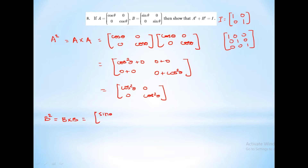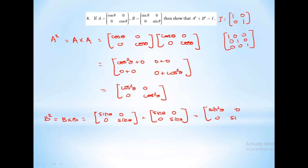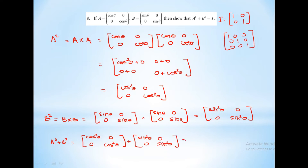B squared equals B into B, which is sin θ, 0, 0, sin θ multiplied by sin θ, 0, 0, sin θ, which equals sin²θ, 0, 0, sin²θ. Now A squared plus B squared equals cos²θ, 0, 0, cos²θ plus sin²θ, 0, 0, sin²θ, which equals cos²θ plus sin²θ, 0, 0, cos²θ plus sin²θ.